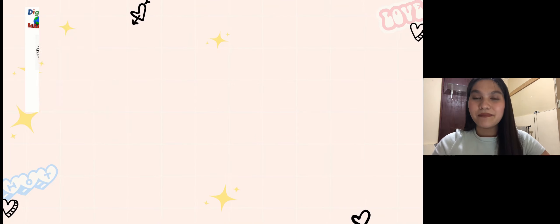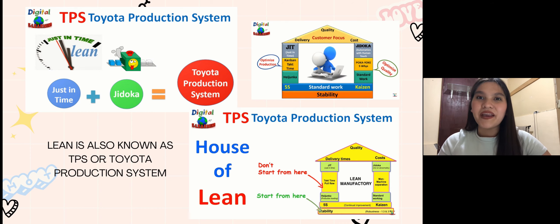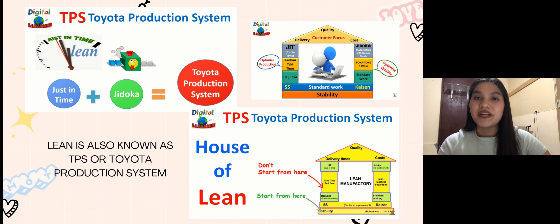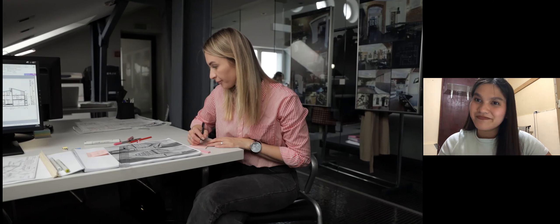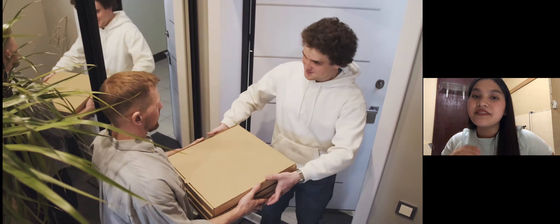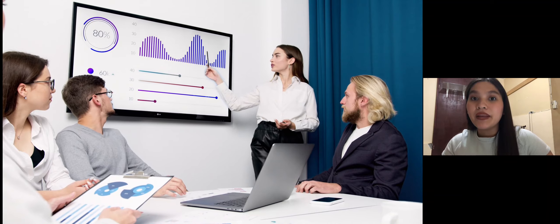Lean manufacturing strategy's roots lie in Japanese manufacturing with the Toyota Production System. Lean's principles pioneered by Toyota include just-in-time manufacturing, where inventory is kept as low as needed, automation supervised by human workers to maintain quality control, and the minimization of downtime and transportation, which has greatly contributed to this strategy.